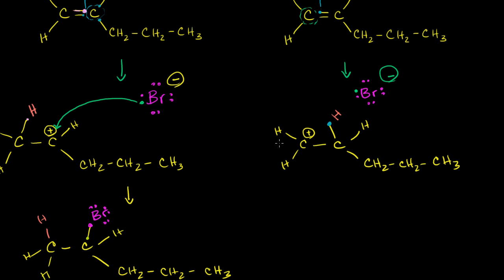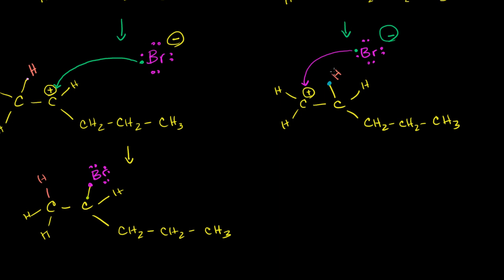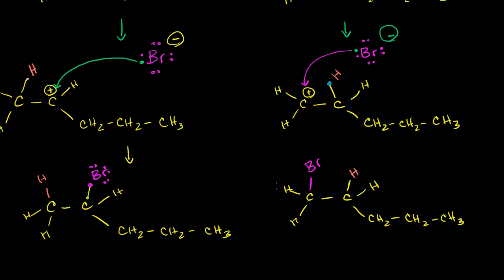Notice the difference: before, the left carbon lost the electron, so the hydrogen bonded to that carbon. In this situation, the right carbon lost the electron, so the hydrogen bonded to the other carbon. From here, something very similar happens as in the first video, but now it happens to this carbon. This carbon is positive and the bromide ion is negative, so the bromide will want to donate its electron to the carbocation, forming a bond. So the bromide bonds to this carbon, and we're done.